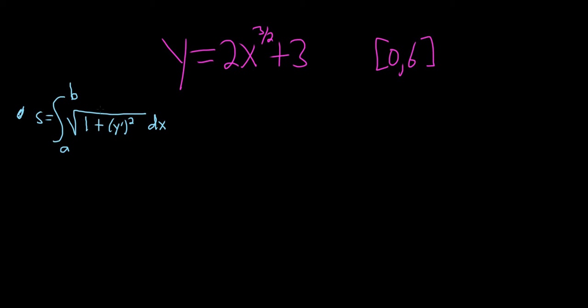So all we have to do is work out what's inside the square root and then attempt to integrate it. So y prime, we can just put the 3 halves in the front, so we get 3 halves times 2. So x to the 3 halves.